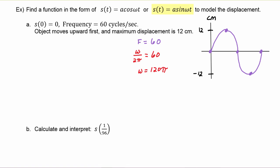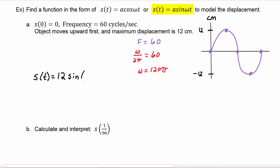Now we can fill in our equation. We're using the sine model, so s(t) = 12·sin(120π·t). Here is our position function that we'll be using.